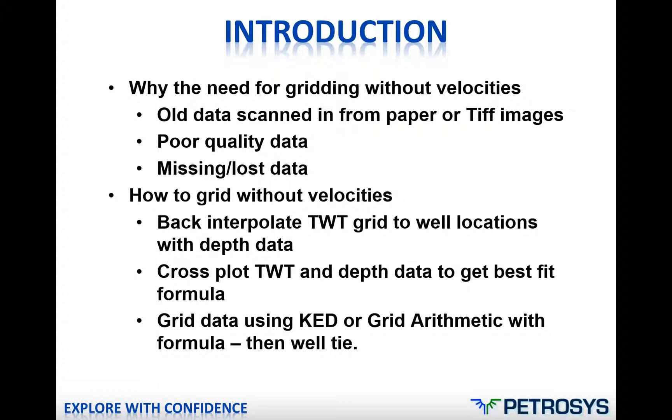So how do we go about gridding without velocities? We grid up our two-way time data from our seismic, and then we have a well file with our depth data. We back-interpolate our two-way time data to our well data, then cross-plot the depth data at the well location against the two-way time at that location. We come up with a formula for the line of best fit and use that formula in grid arithmetic to depth-convert. We can also use KED — kriging with external drift — where we have a very good correlation between time and depth, and then back well-tie the depth on our grid to the well locations.